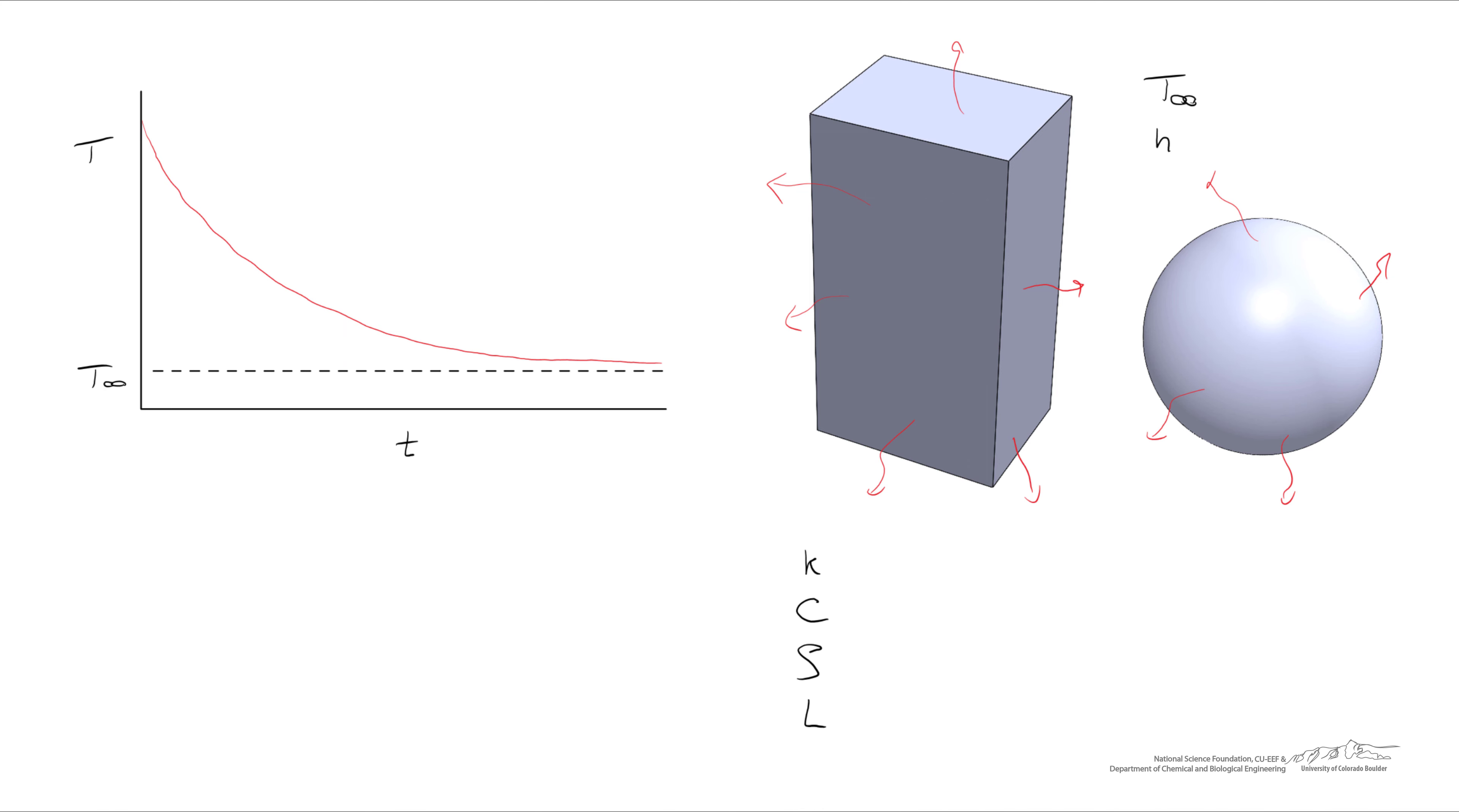And for that to be true, K has to be some really large value. We need the energy to diffuse readily throughout the object very quickly, such that the temperature is uniform.